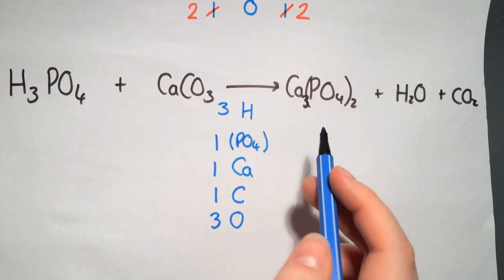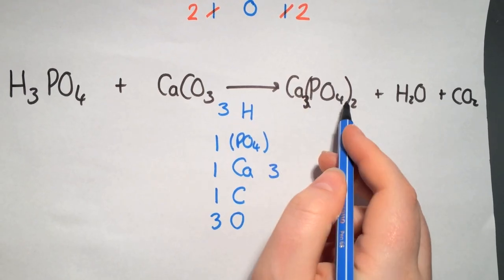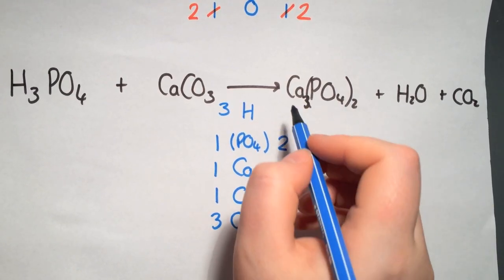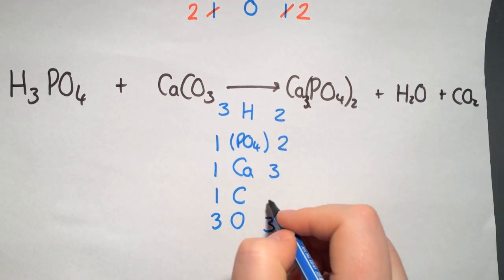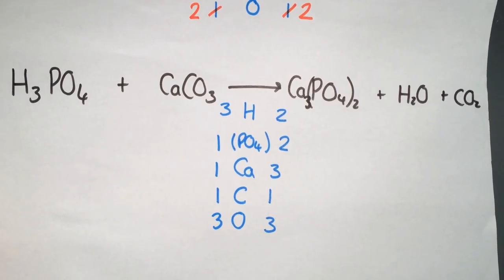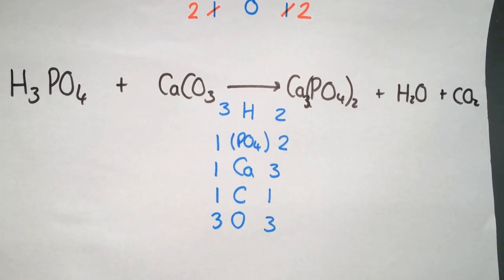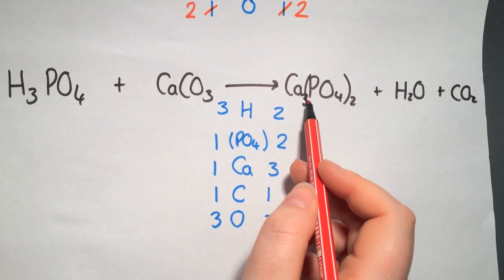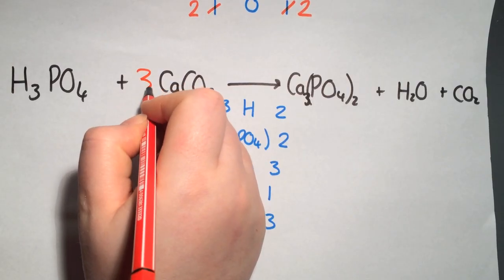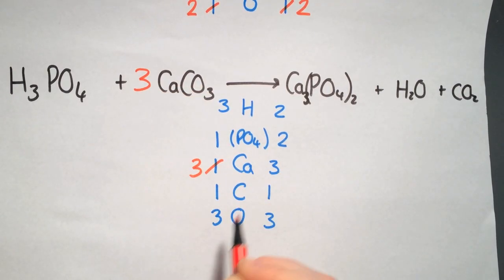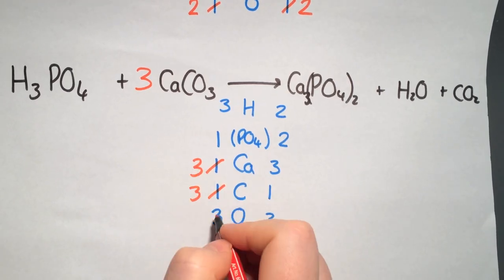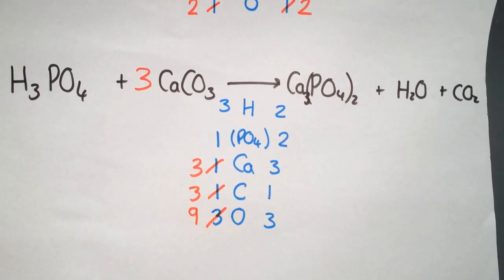On the other side we have three calciums, two PO₄ groups, two hydrogens, three oxygens, and one carbon. To balance we start with calcium — three on this side, only one on the other — so we put a large three in front of the calcium carbonate. That multiplies the calcium by three, the carbon by three, and the oxygen by three giving nine oxygens. Looking at PO₄ as a whole group, we have two on one side and one on the other.